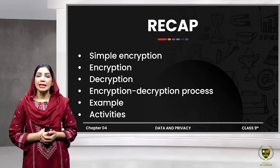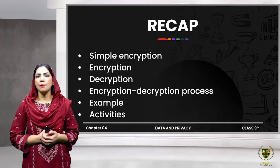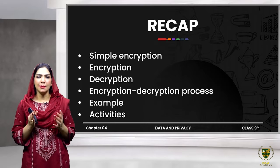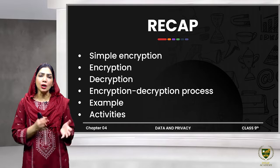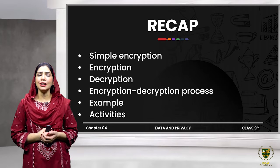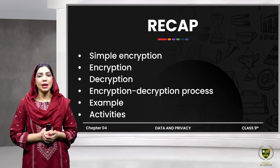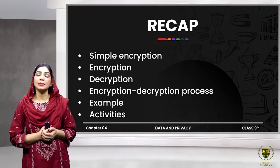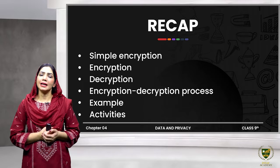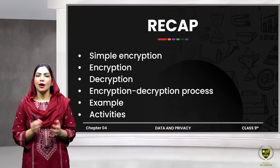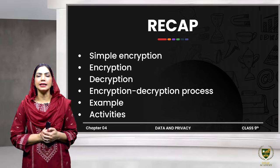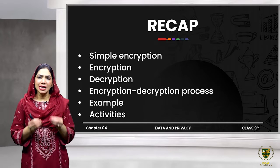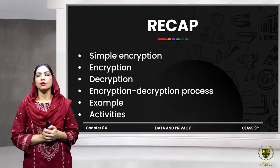We have a process in which we make data into an unreadable form, and the unreadable form is only readable for our authorized person. Encoding is basically the conversion of data to an unreadable format. When we convert data to this unreadable format, we say that we encrypt it.